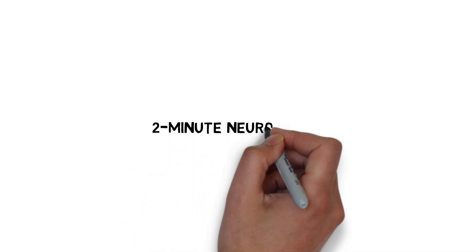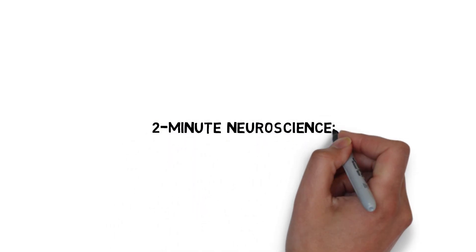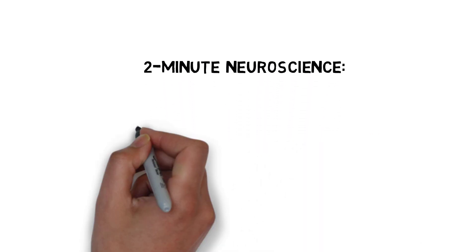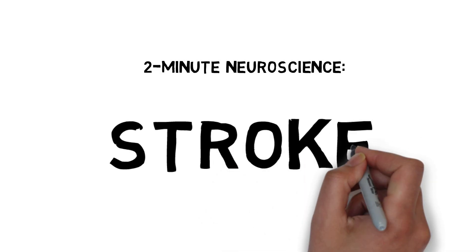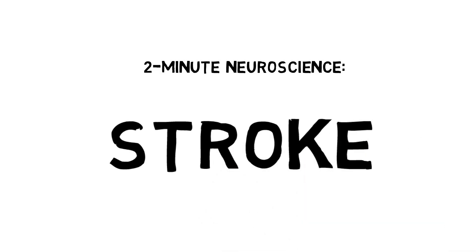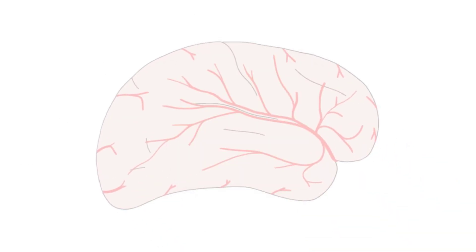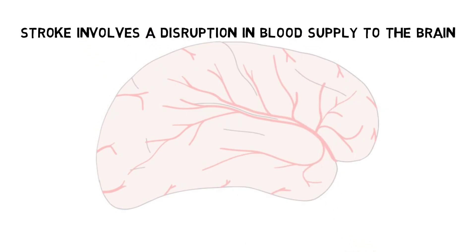Welcome to Two Minute Neuroscience, where I explain neuroscience topics in two minutes or less. In this installment, I will discuss stroke. Stroke occurs when blood flow to part of the brain is suddenly disrupted. It is the second leading cause of death in the world.